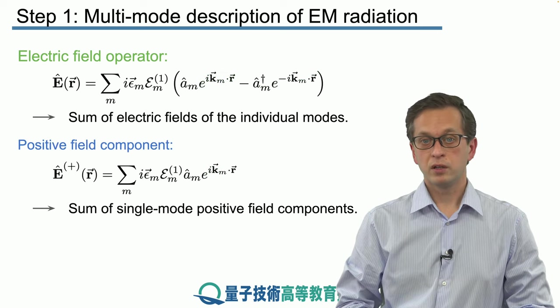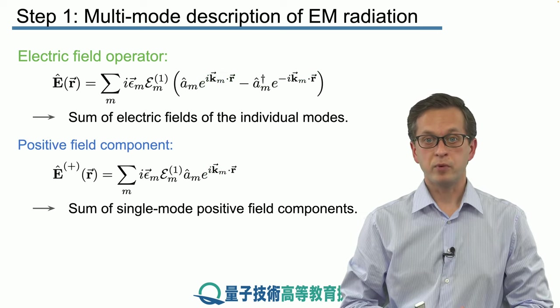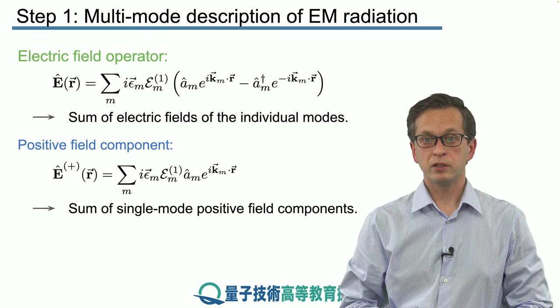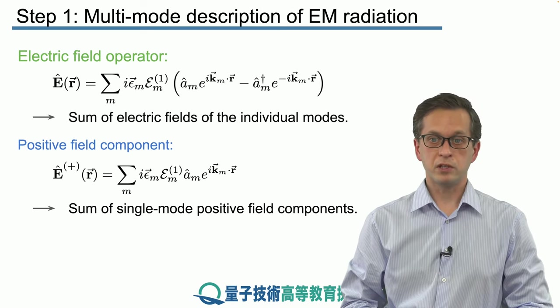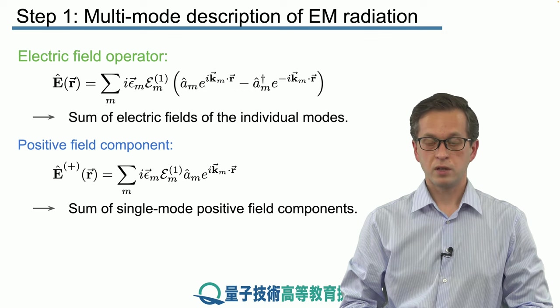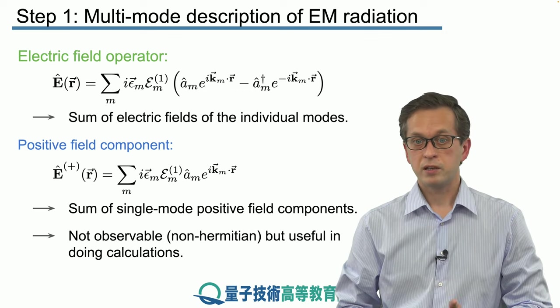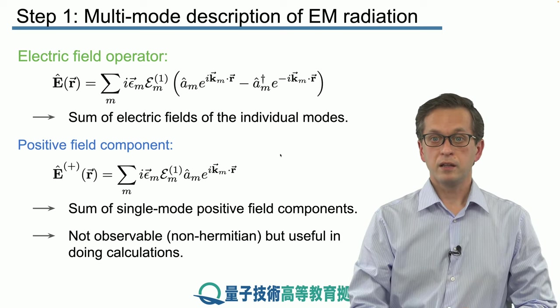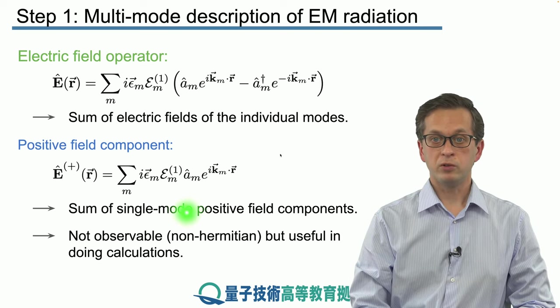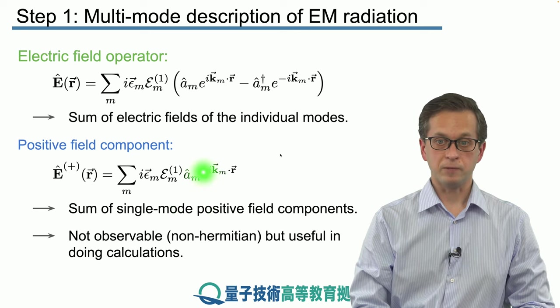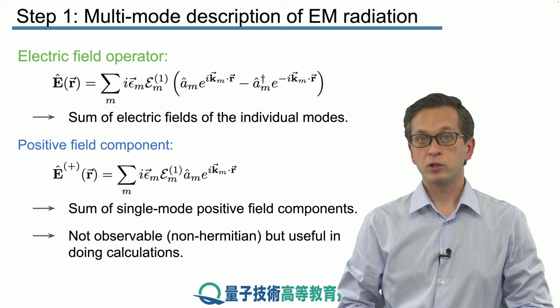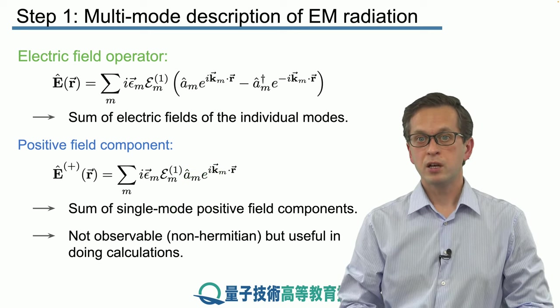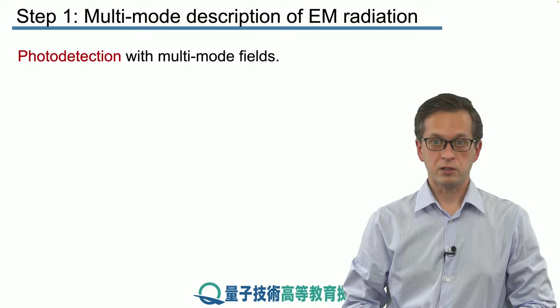Also, a very useful operator is the positive field component of the electric field, and that's just given as the sum of single-mode positive field components. To remind you, this operator is not an observable because it is not Hermitian. Here we only have a, we do not have a dagger as well. But it's very useful when doing calculations, particularly when we are calculating photodetection signals.